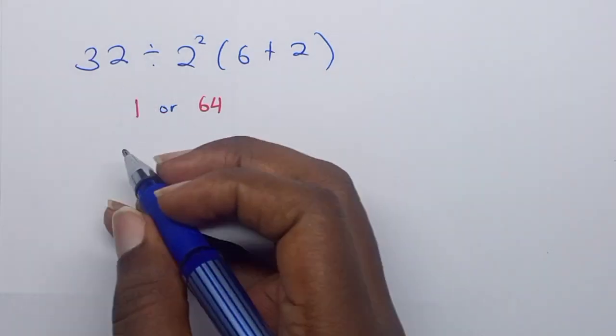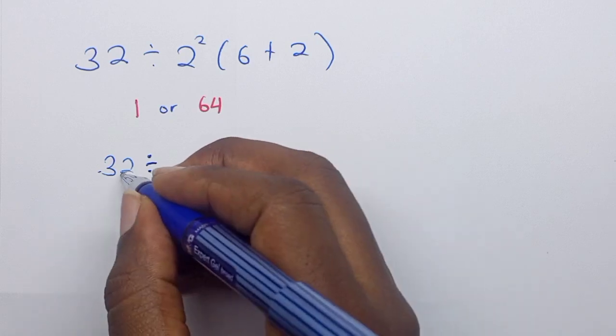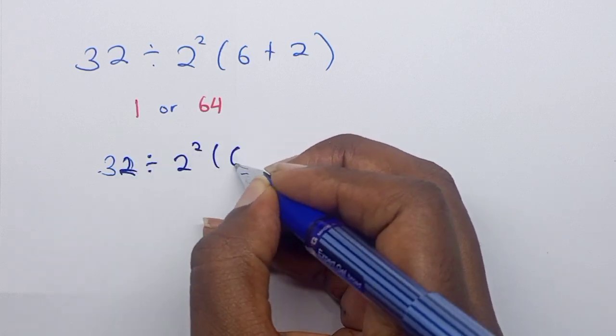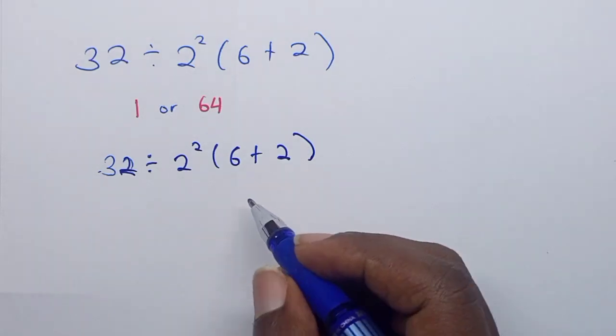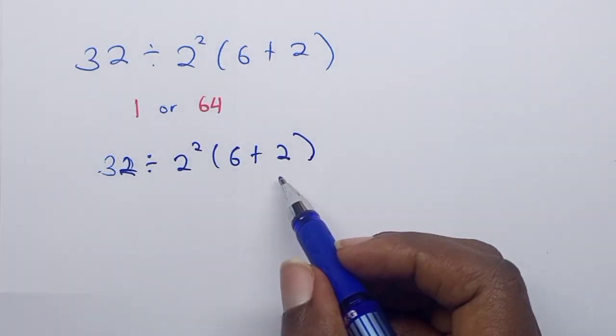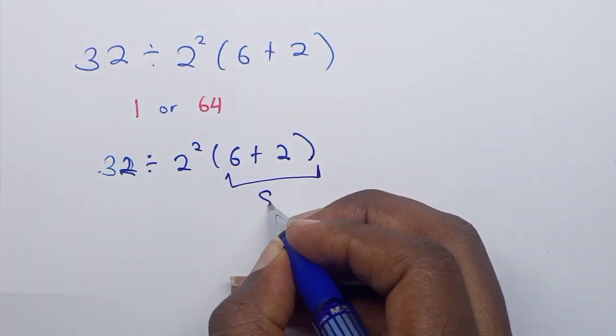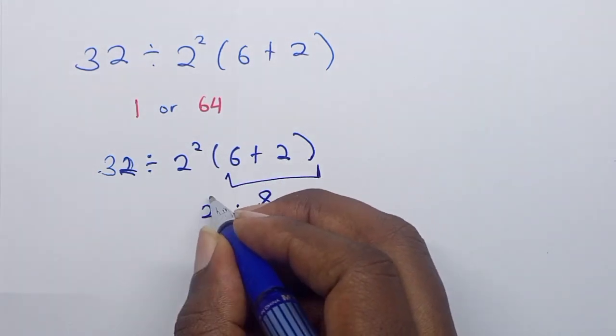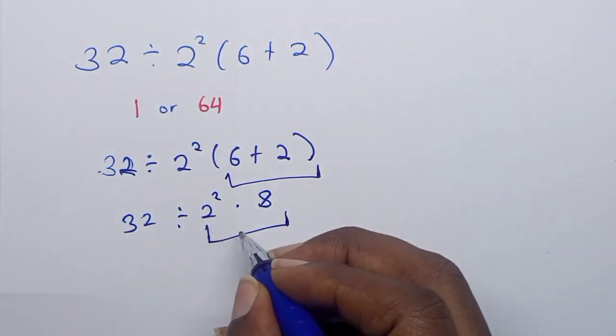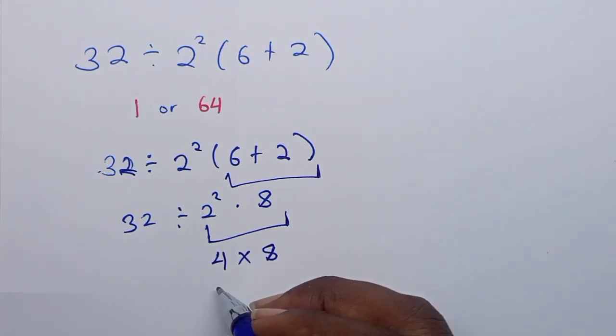Let's continue. So 32 divided by 2 squared times 6 plus 2. Now, 6 plus 2 equals 8. So 8 times 2 squared. This here is 4 times 8, which is 32.